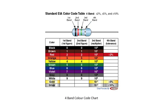The color code has each number represented by a color: black, brown, red, orange, yellow, green, blue, violet, gray, and white, representing zero to nine. The first band represents the first number, the second band represents the second number, the third band represents the multiplier or how many zeros after the first two numbers, and the fourth band represents the tolerance.